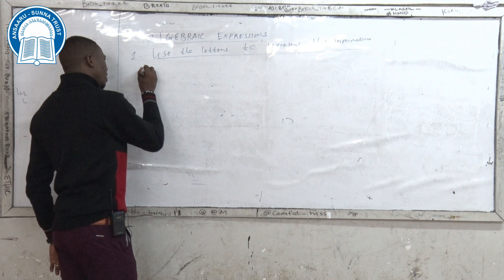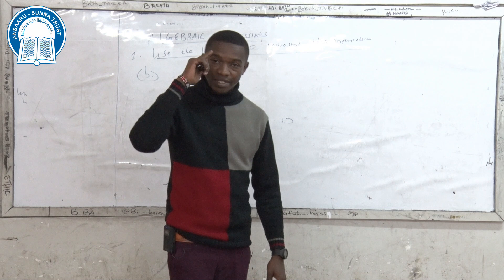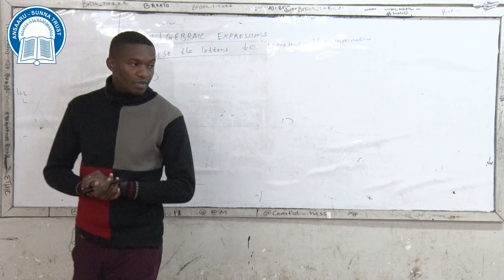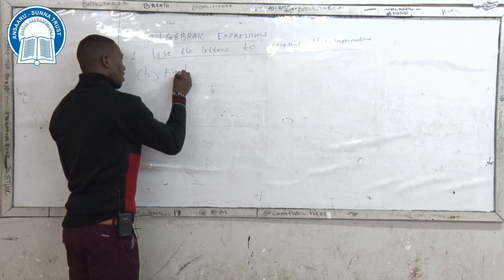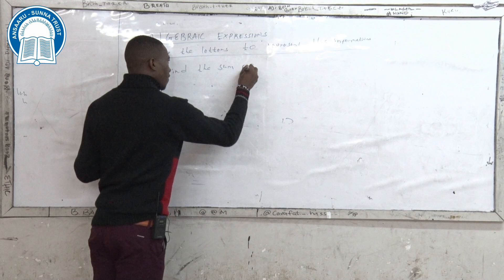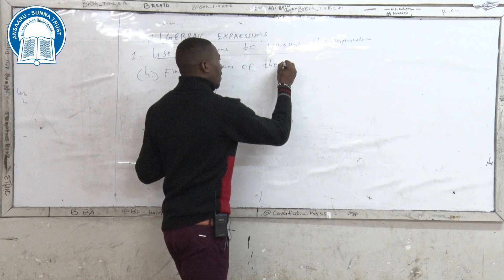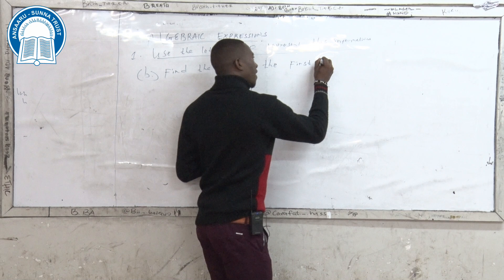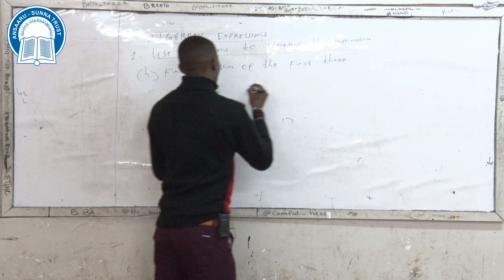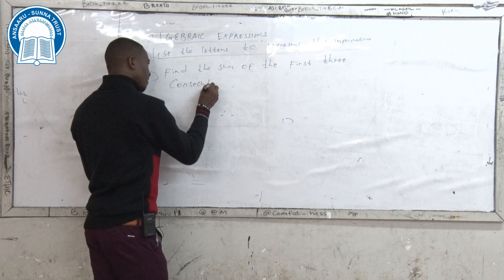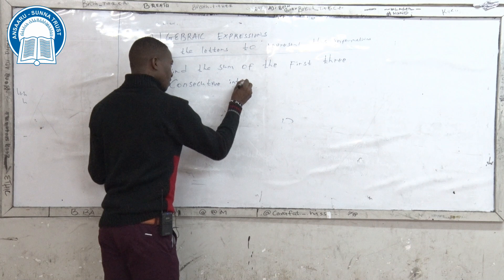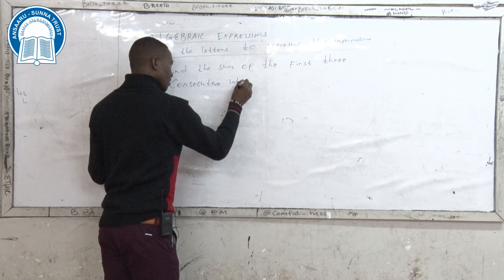Let us go to number two, which I will denote as B. Find the sum of the first three consecutive integers.